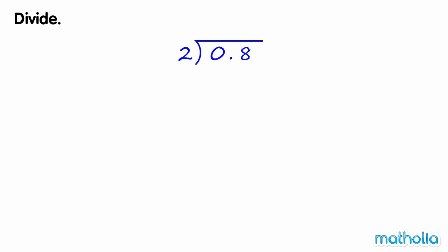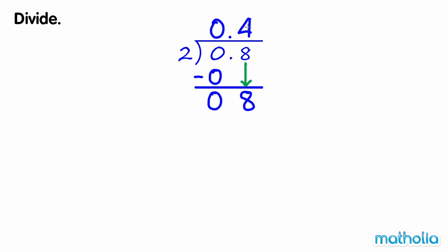Divide. Let's find 0.8 divide 2. Start by dividing the ones. 0 ones divide 2 equals 0. Bring down the tenths. 8 tenths divide 2 equals 4 tenths. Remember to write the decimal point.